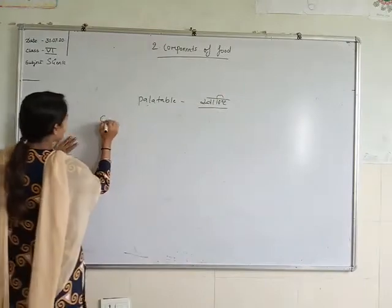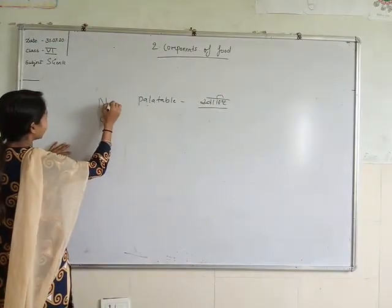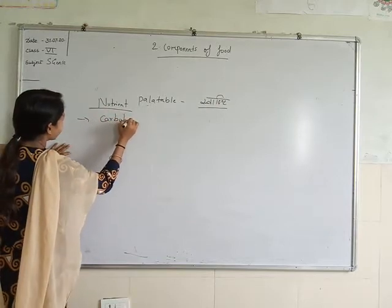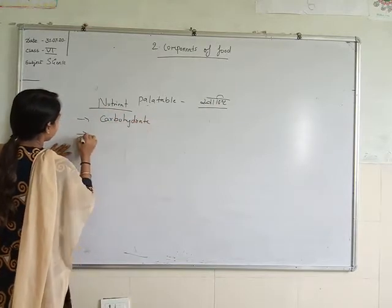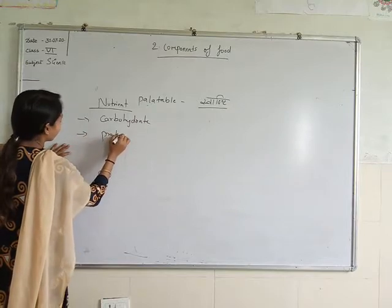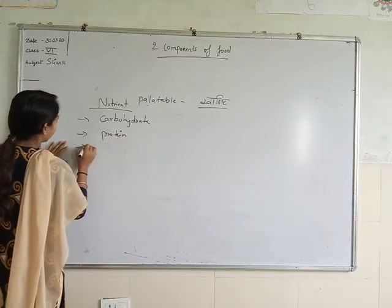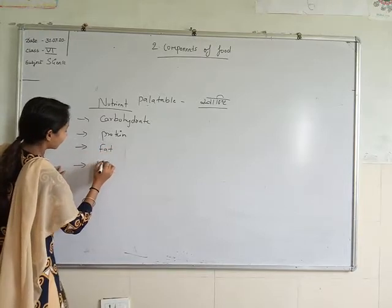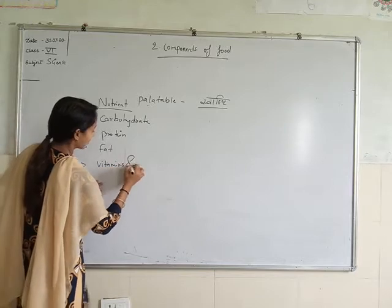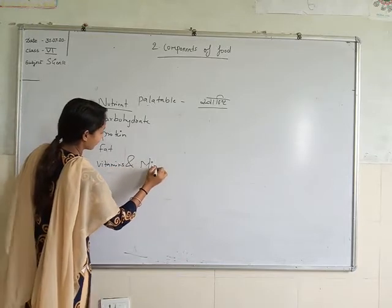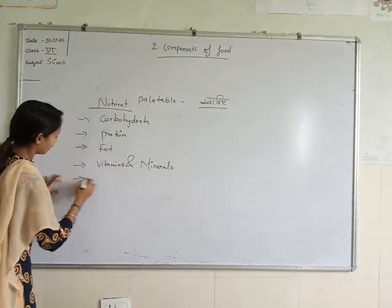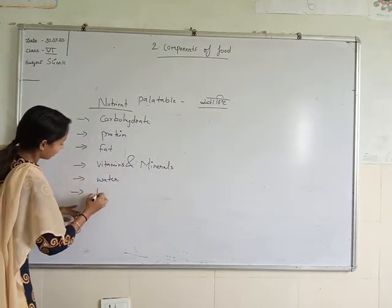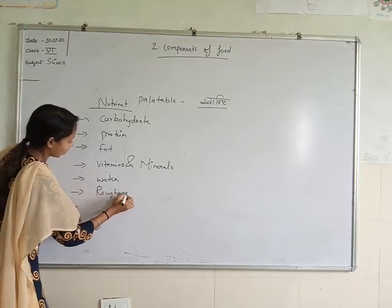These are some nutrients our body needs. Number one is carbohydrates. Next is protein. Third is fat. Fourth is vitamins and minerals. Next is water. And then roughage.